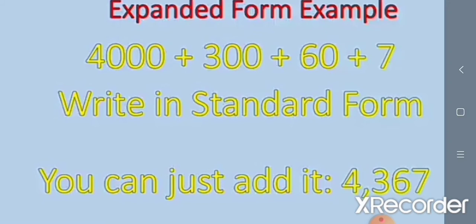Let us see one example. Expanded form example: four thousand plus three hundred plus sixty plus seven. Write in standard form. You can just add it: four thousand three hundred and sixty-seven — 4,367.